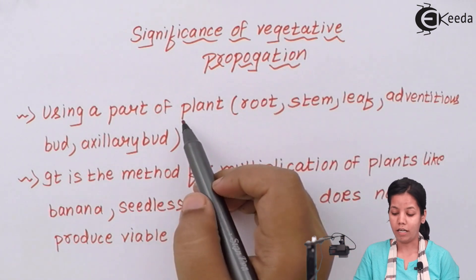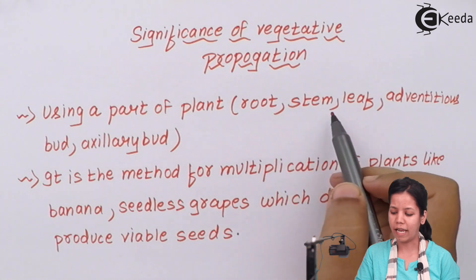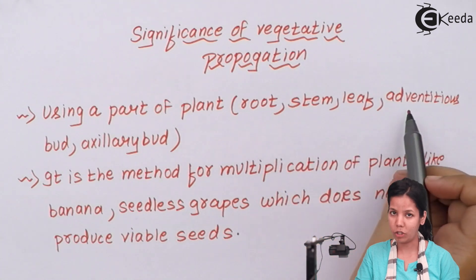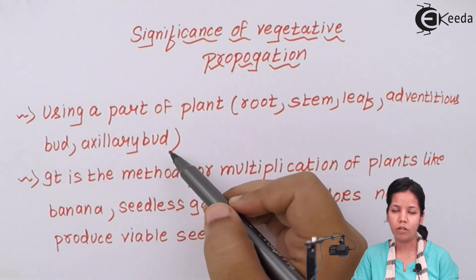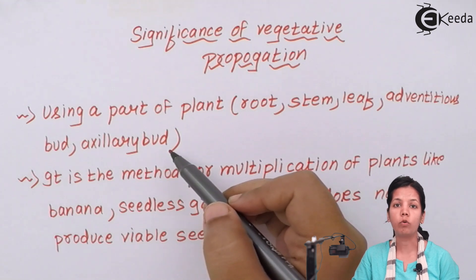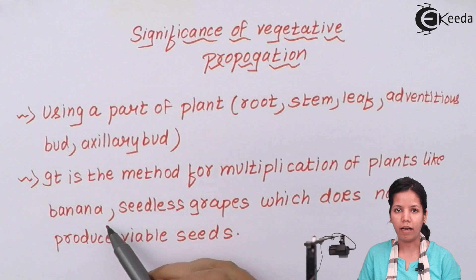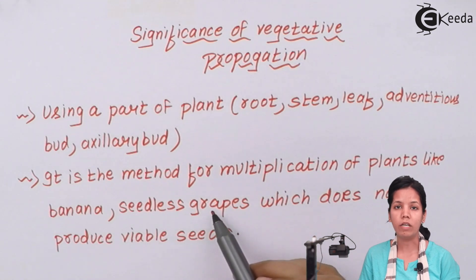Vegetative propagation can be done using parts of root, stems, adventitious buds or axillary buds. This method is used for many fruits — for example, in fruits which do not have seeds like banana, or seedless varieties of fruit in which you never see seeds.